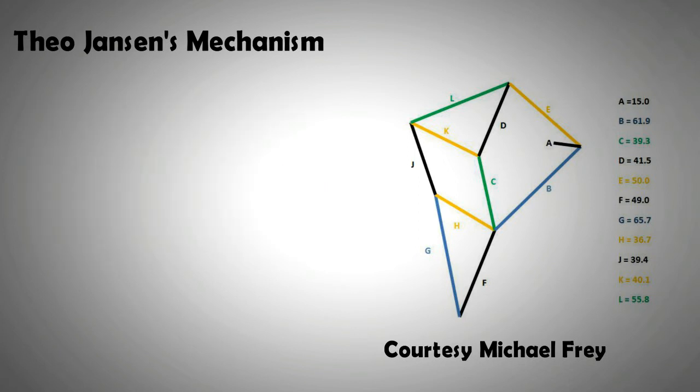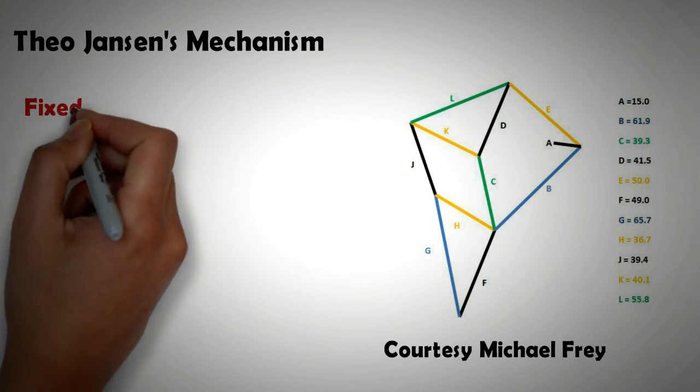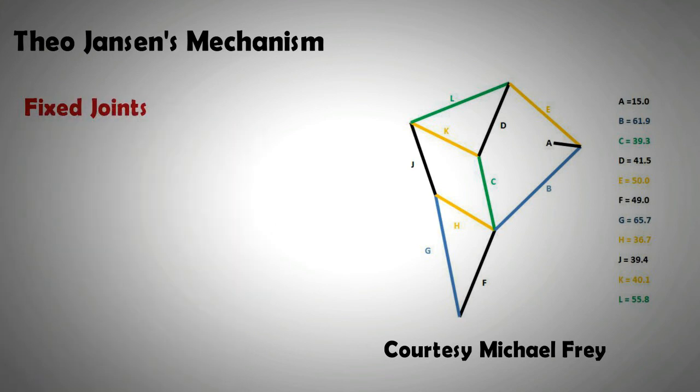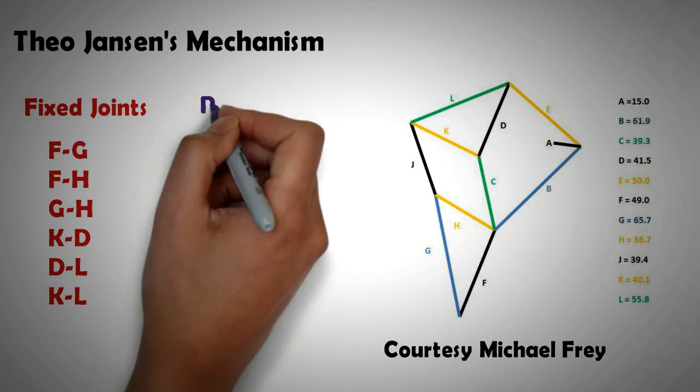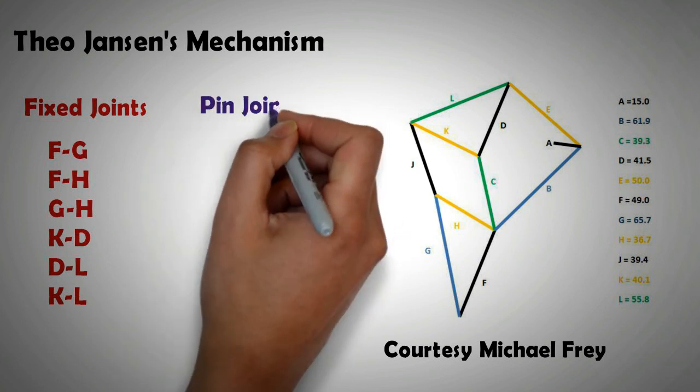Various other legs can be attached at phase differences for a smoother movement. In the diagram, fixed joints that don't allow any rotation are the following. The joints that are pin joints that allow relative rotation between the two links are as follows.